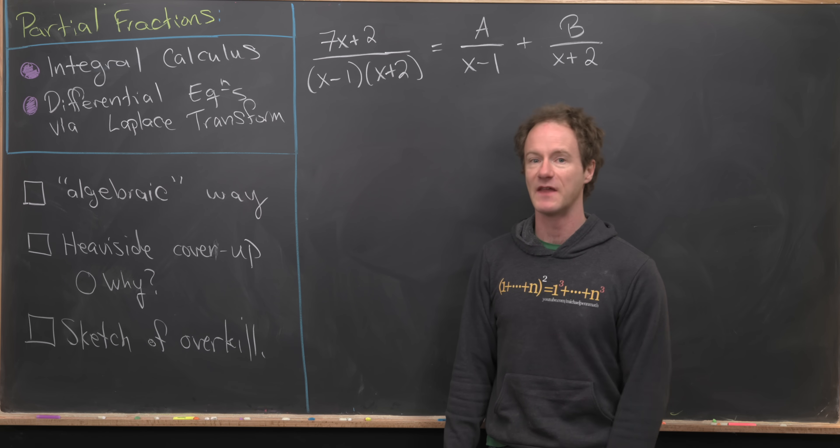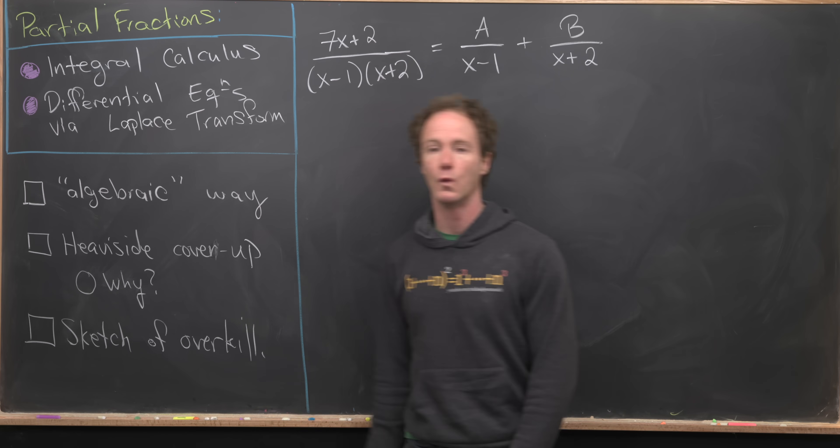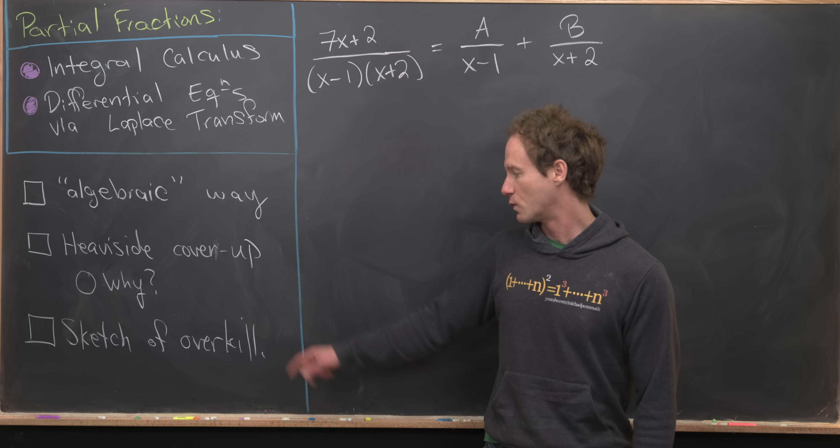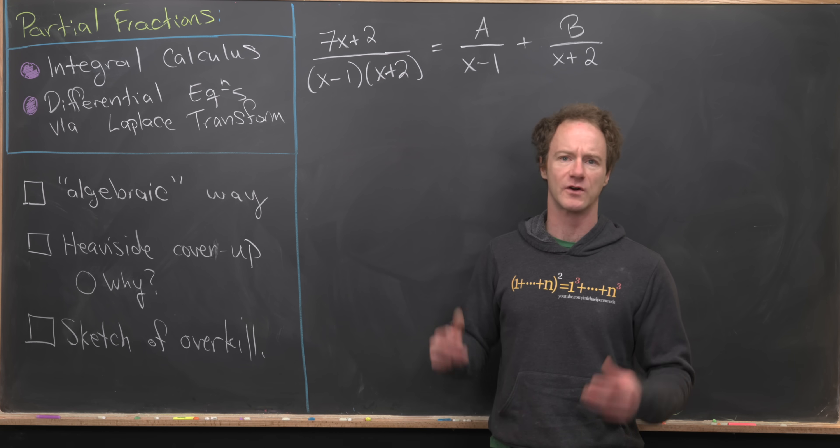We're actually going to look at three methods for decomposing a rational function: the algebraic way, which is the way that I always do it; the Heaviside cover-up method, where we're going to prove why it works; and then we're going to sketch an overkill method in order to perform this decomposition.